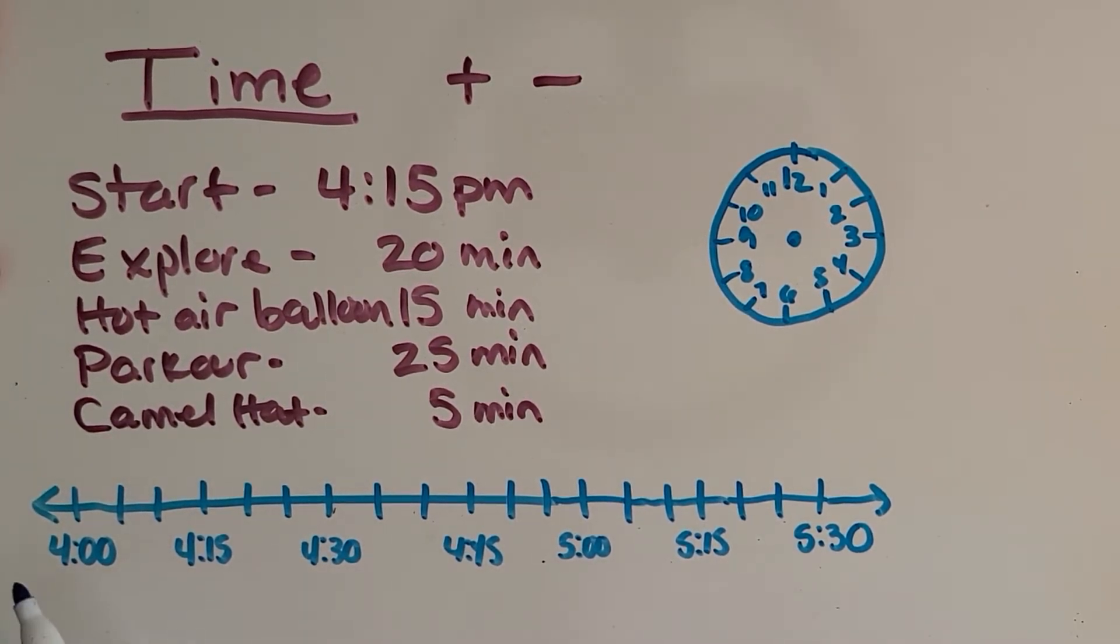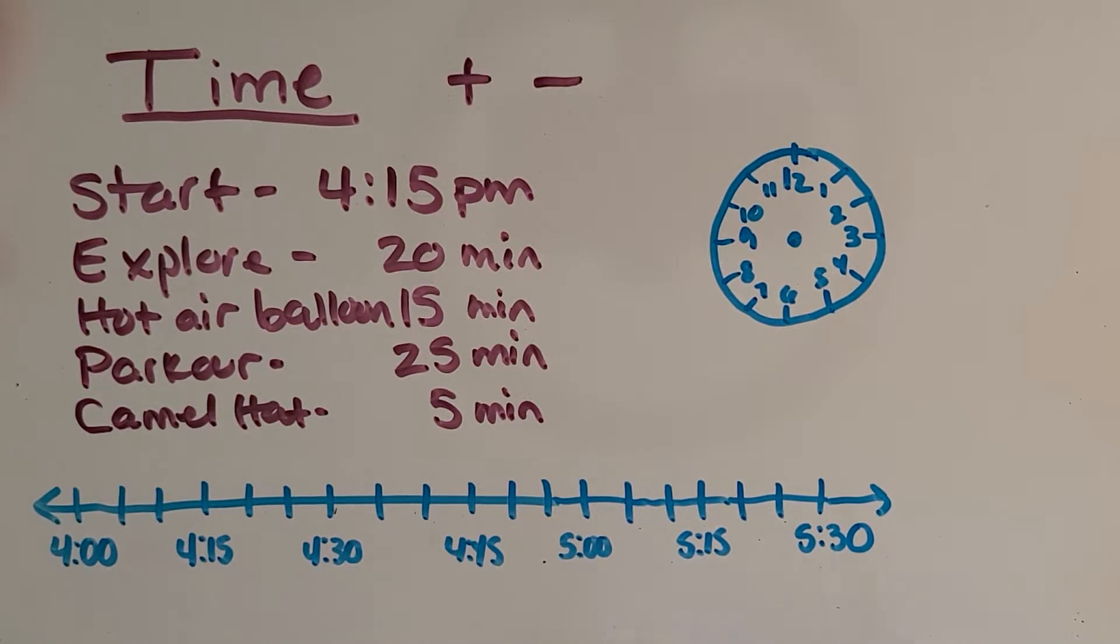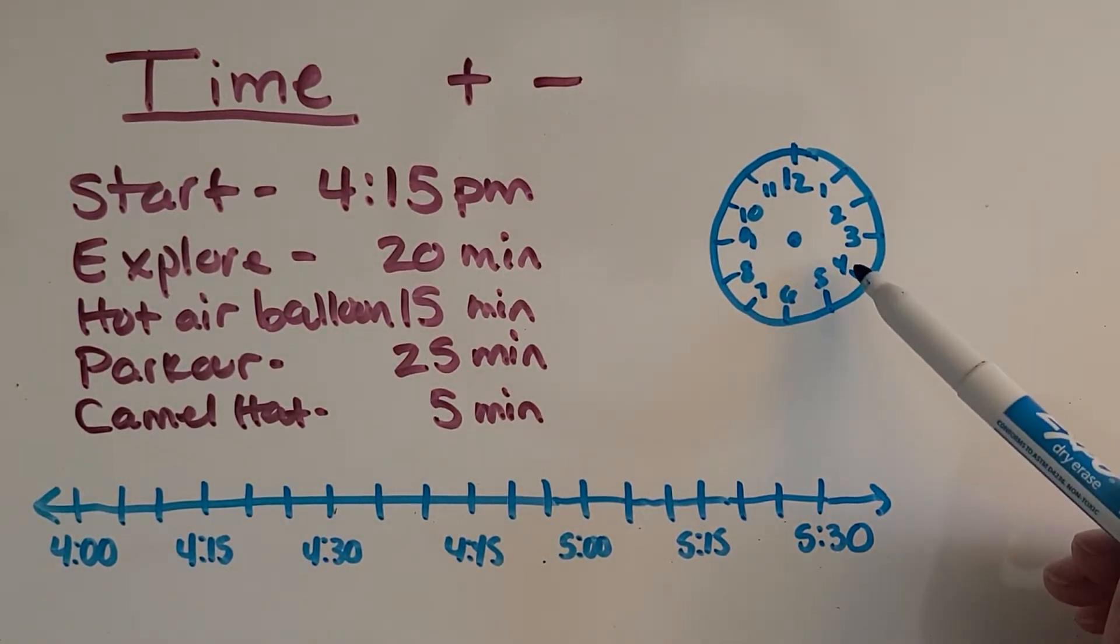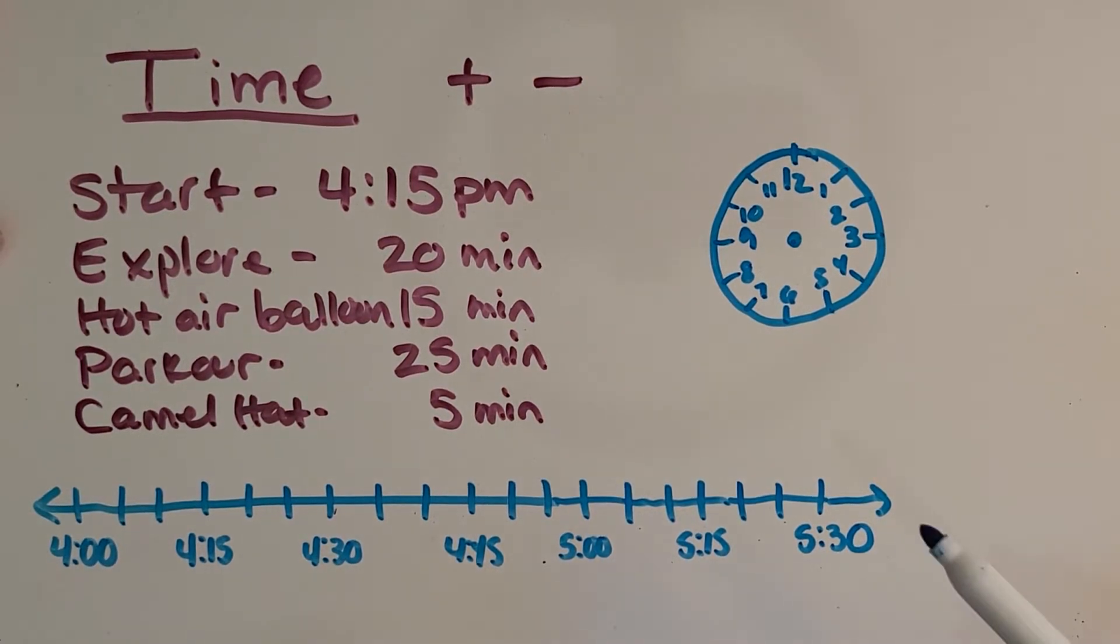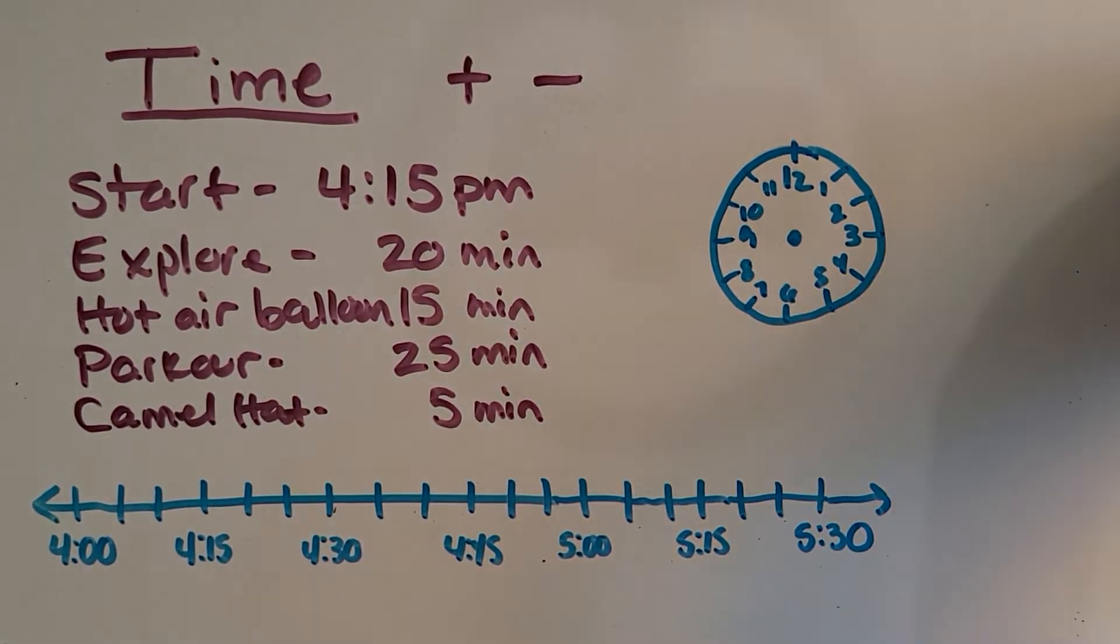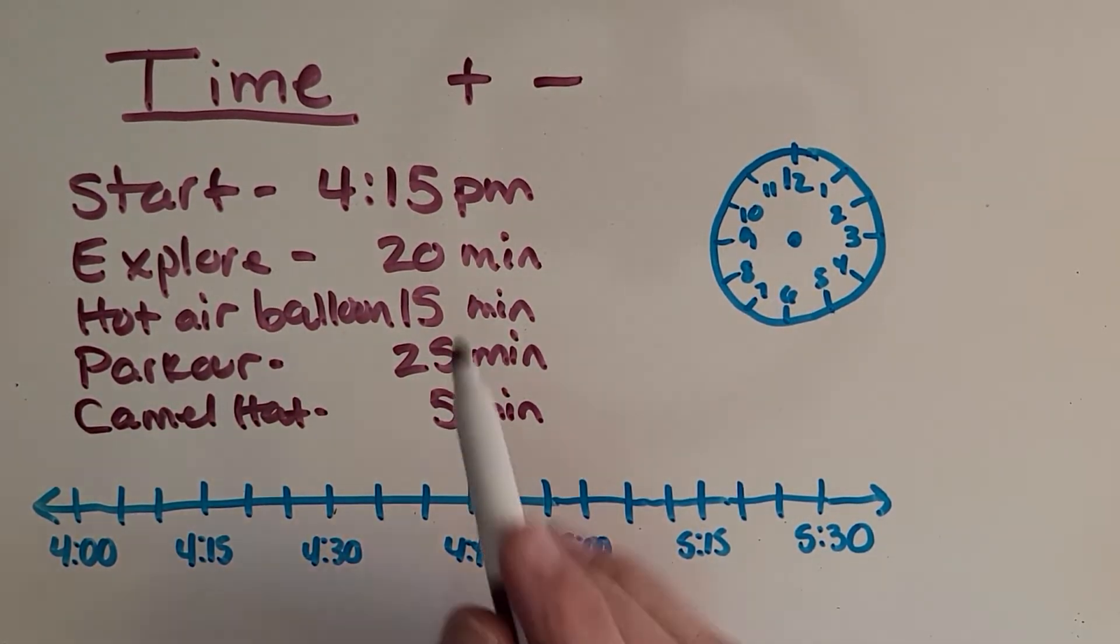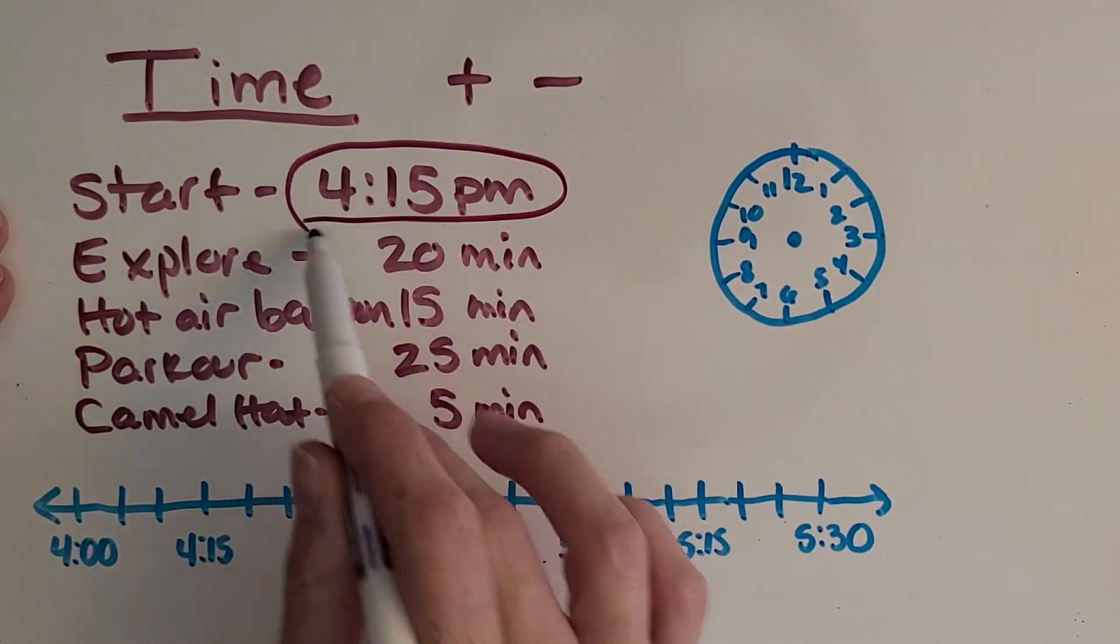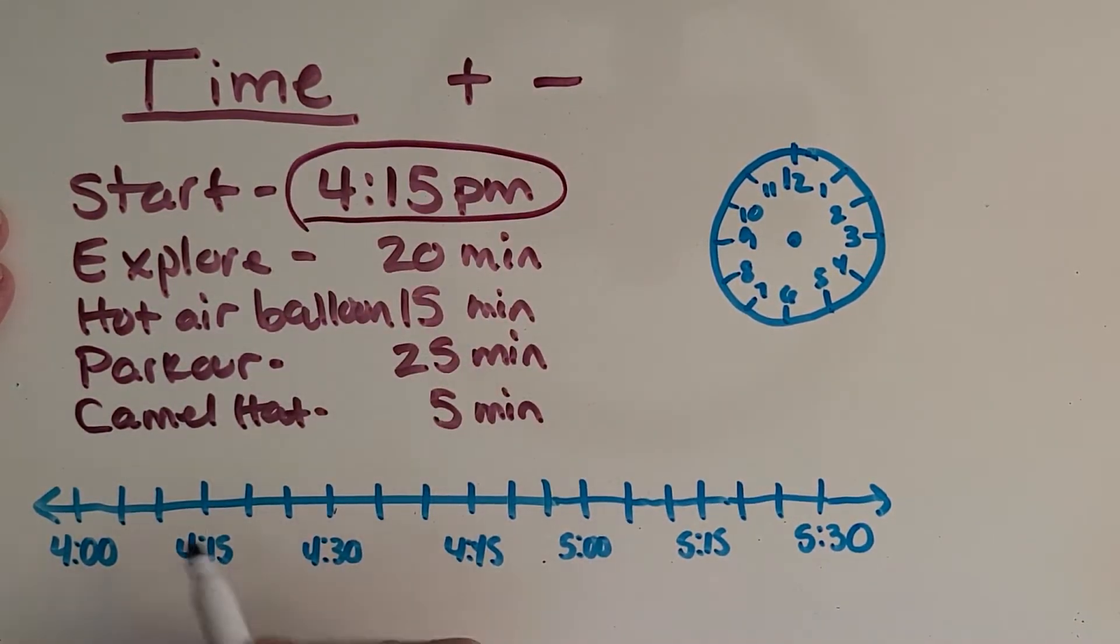Okay, so there's a couple ways we can do this. I have found that a number line is super helpful. A clock is super helpful, and so let's start with our number line. So where should I put my starting point for this problem? Oh you got it, 4:15 is my start time, so I'm going to mark that on the number line.